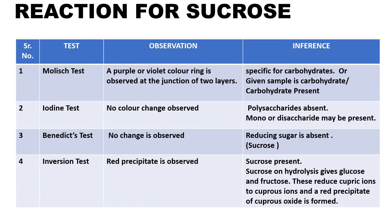Next is sucrose — it is a non-reducing sugar. First we perform Molisch test: as it is a carbohydrate, we get a purple-violet ring at the junction of two layers, so carbohydrate is present. Iodine would be negative — polysaccharide absent, mono or disaccharide may be present. Next is Benedict's test — there would be no change observed because the given sugar is non-reducing in nature.